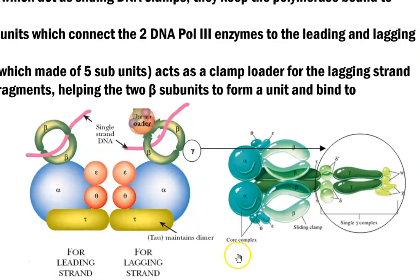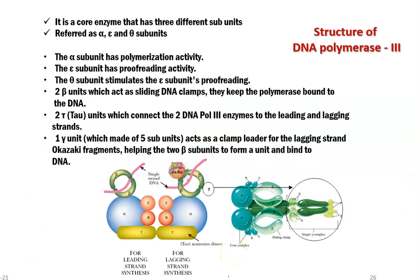In this diagram, you can look at the subunits present. The alpha subunit is found to possess polymerization activity. The epsilon subunit is associated with proofreading, that is 3'-5' proofreading activity. The theta subunit stimulates the epsilon subunit's proofreading activity.